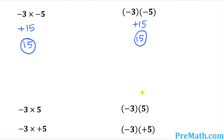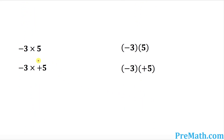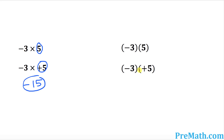How about negative three times five? We know that five can be written as positive five, so this is negative three times positive five. Negative times positive is negative, and three times five is 15, so the answer is negative 15. The same applies using parentheses notation: negative three times five equals negative 15.